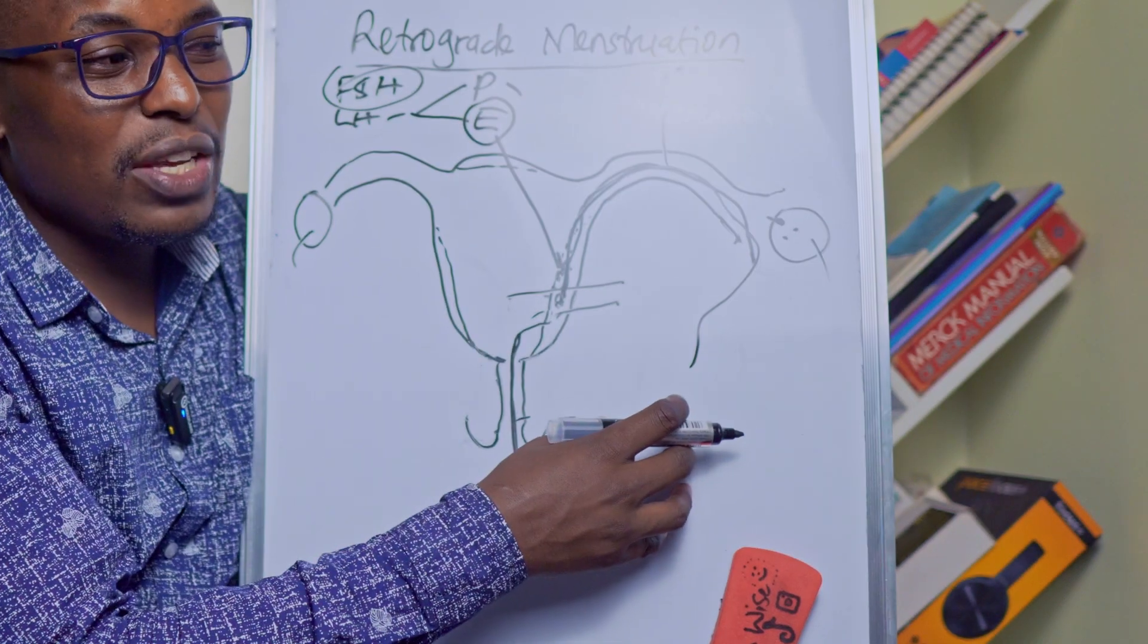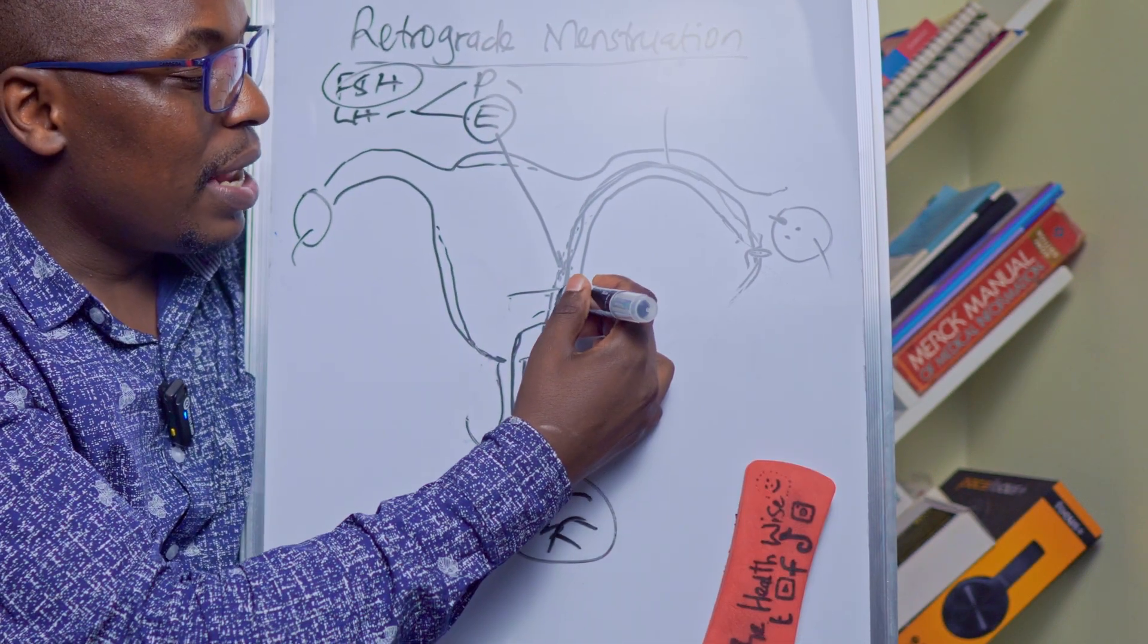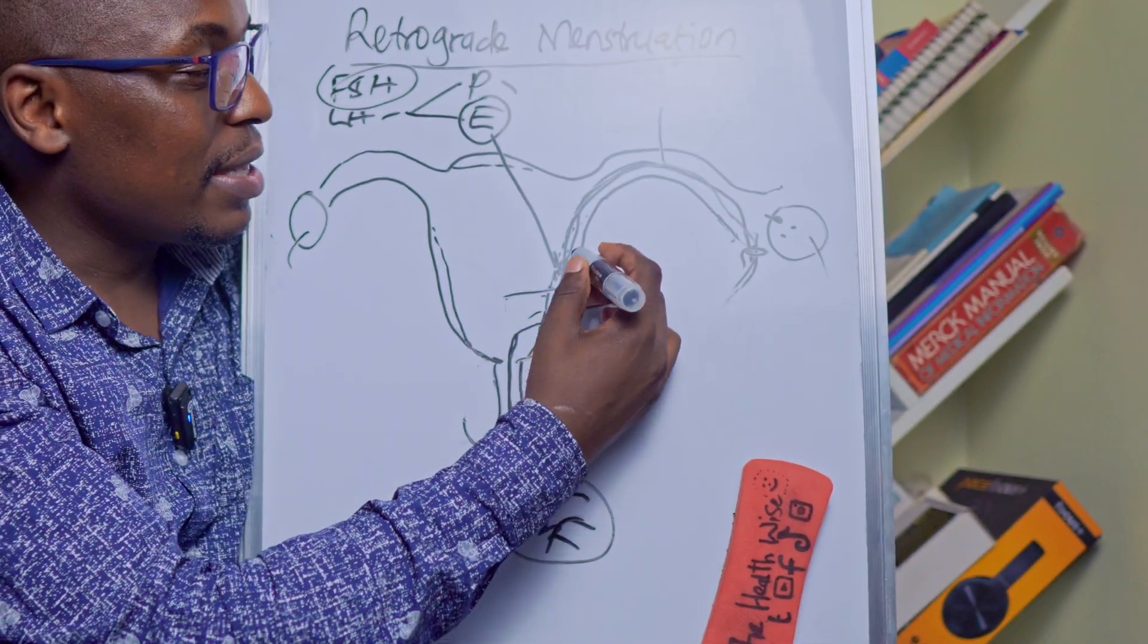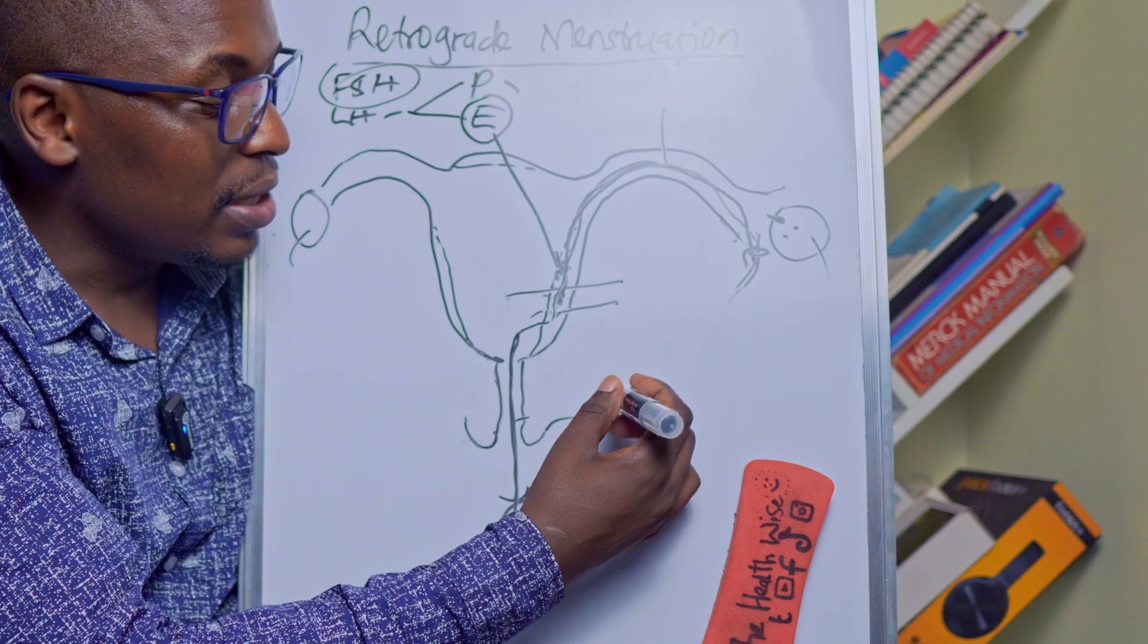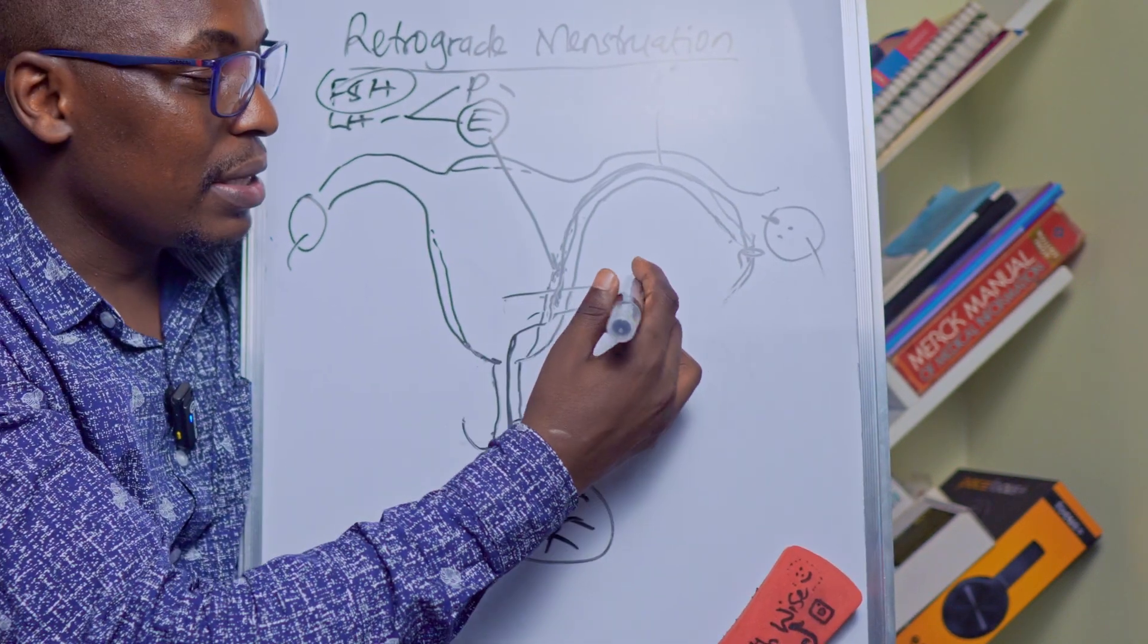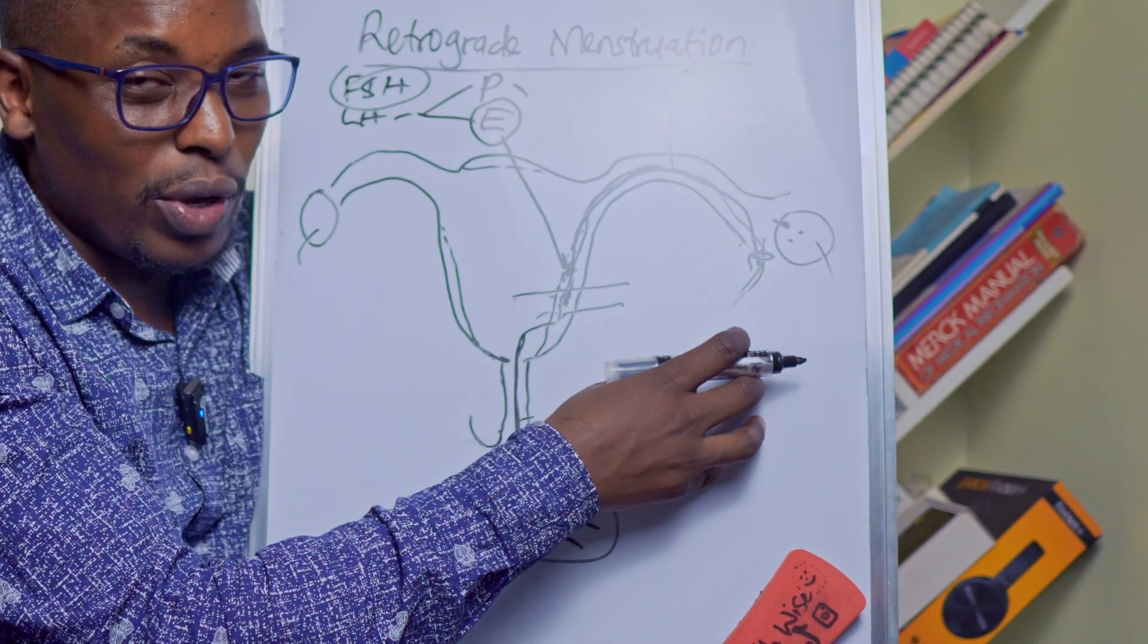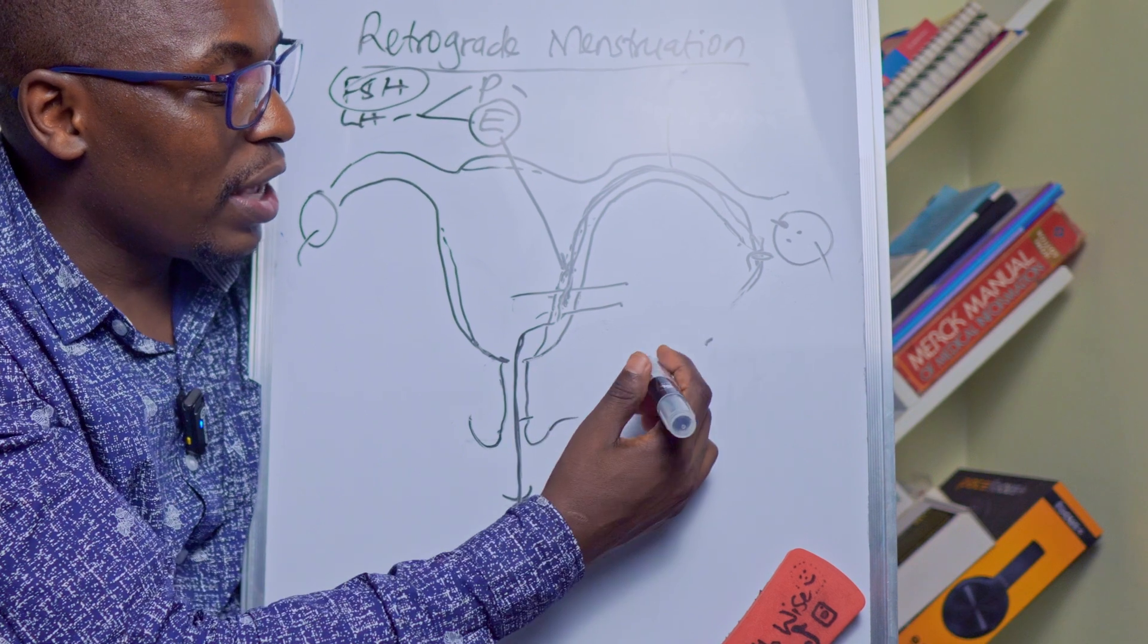And then they fall into your abdomen and they go and attach themselves to the organs in your body. Now this blood containing endometrial cells that fell into your abdominal cavity might not be cleared in time, especially if the quantity is high, and those cells might attach themselves onto other organs.